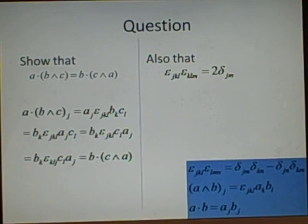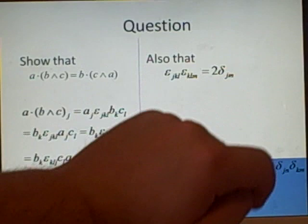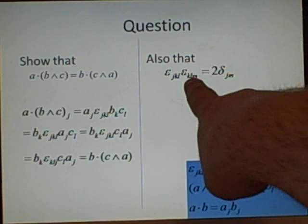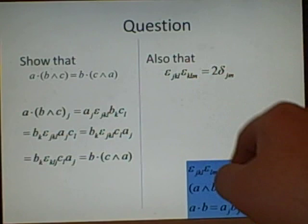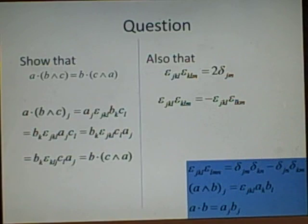First thing we want to do is we want to get this into a form like this, because this will be very useful because we've got deltas. So we need to get the middle terms equal. So we can perform one swap here to make it epsilon lkm. So we minus this. So we do one swap.